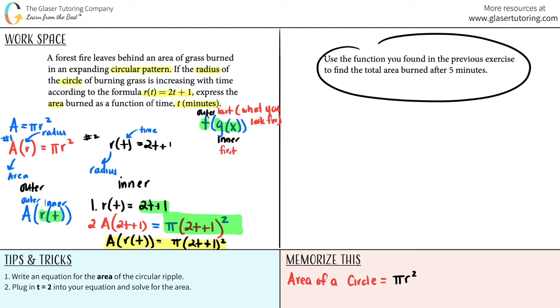Okay, so part 2 says use the function you just found in the previous example to find the total area burned after 5 minutes. So the function that we just found was A(r(t)) = π(2t + 1)². 5 minutes is a time value and that's what we're going to be plugging in for t, 5. And now we can solve the area. I'm just going to say that this is area now. So area = π(2×5 + 1)², all squared.